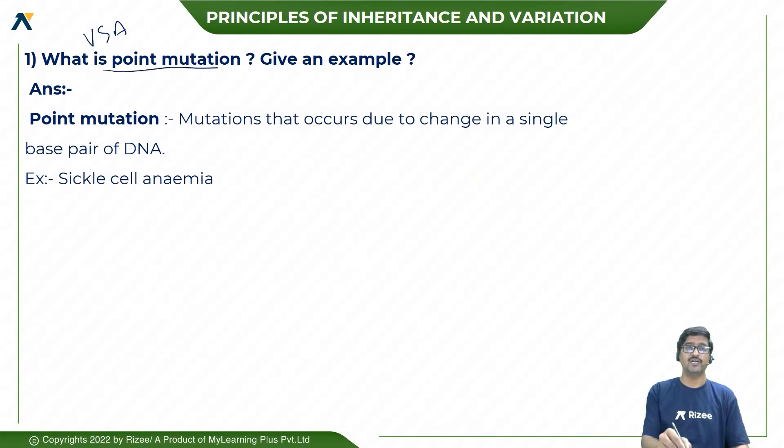What is point mutation? Mutation is called as changes. Point mutation: Mutation that occurs due to the changes of single base pair of DNA.